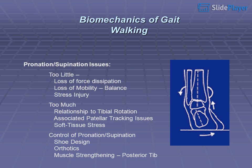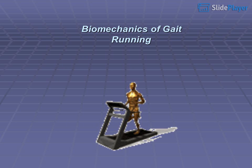Pronation and supination issues: too little leads to loss of force dissipation, loss of mobility, balance problems, and stress injury. Too much is related to tibial rotation, associated patellar tracking issues, and soft tissue stress. Control of pronation and supination includes shoe design, orthotics, and muscle strengthening such as the posterior tibialis.